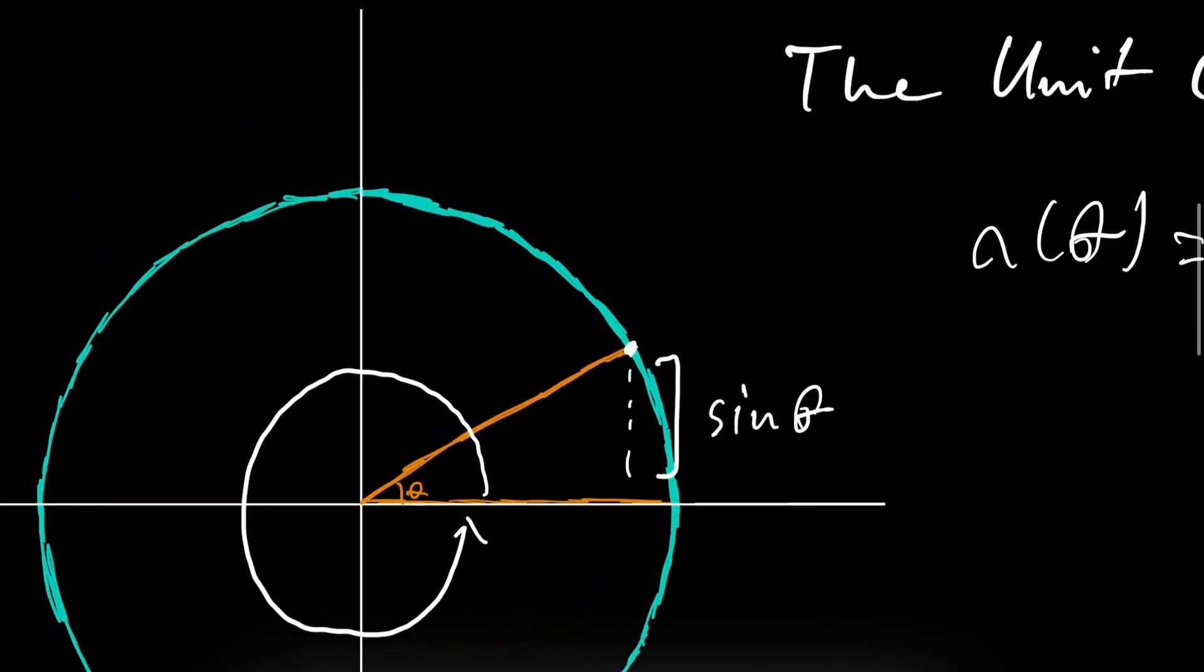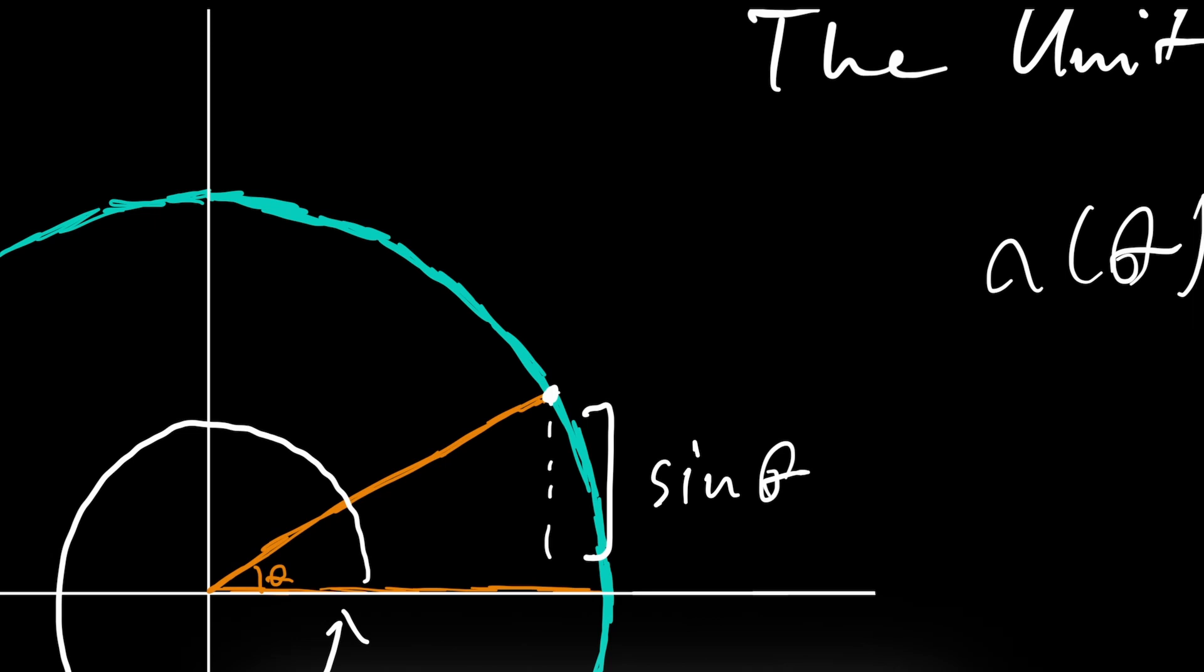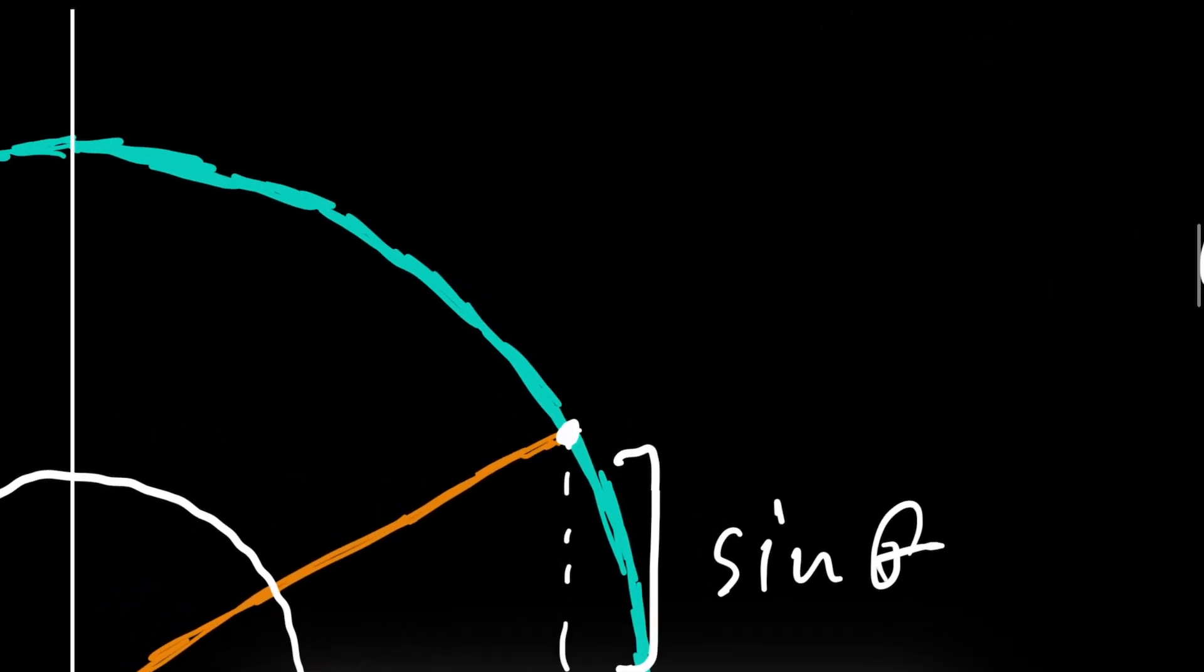Well, what happens as we change theta by a really small amount? Change theta by maybe an infinitesimally small amount. An infinitely small amount, d theta. Well, that would correspond to an infinitely small change in sine of theta. So d sine of theta.